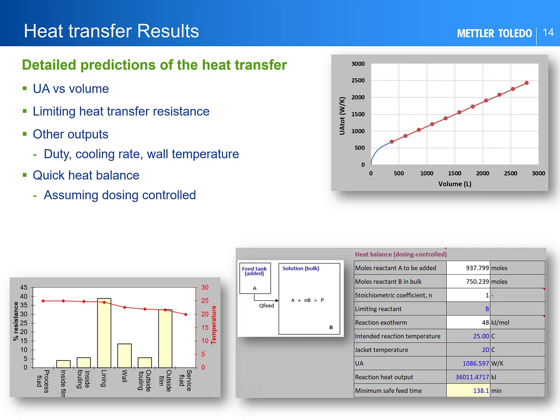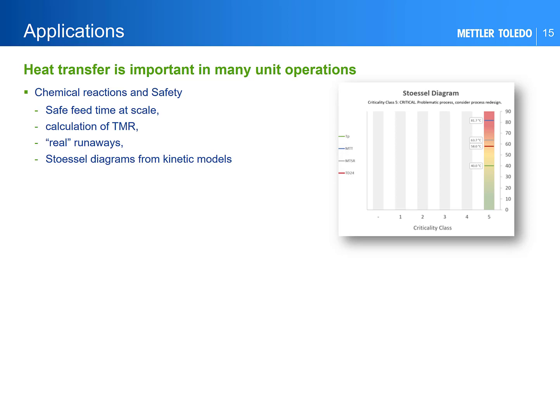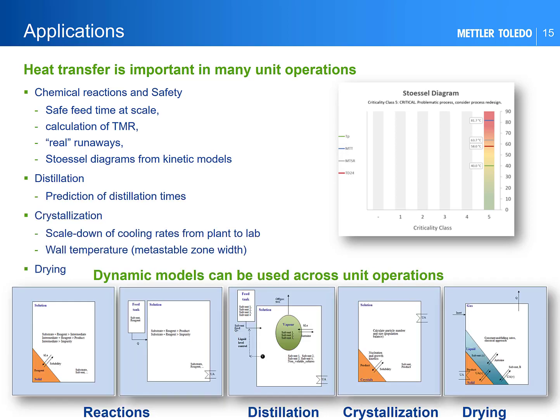With the UA you can also make a quick estimate of the safe feed time with certain assumptions. The UA values can also be fed into other dynamic models — for example, reaction models or distillation models — for more detailed predictions. Heat transfer is obviously key in assessing process safety reactions, and models can include the UA to predict behavior on scale including loss of cooling. We have many models and tools in this area to assess process safety from UA in combination with calorimetry data such as RC1 data, ARC data, and DSC data for main and decomposition reactions. The small process scheme plots represent different dynamic transient models across the range of typical unit operations where mixing and heat transfer are important.